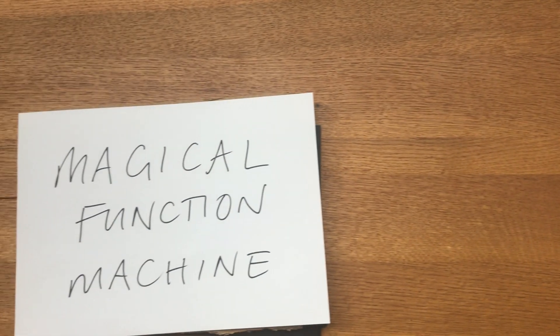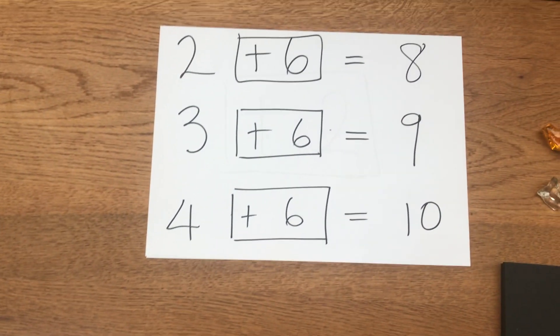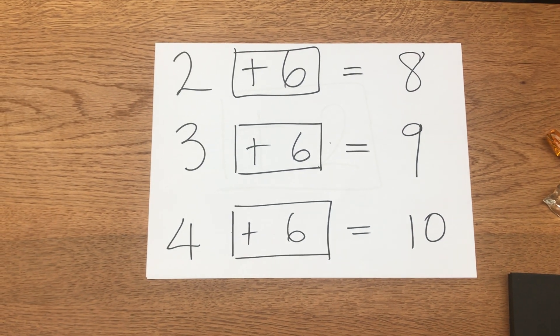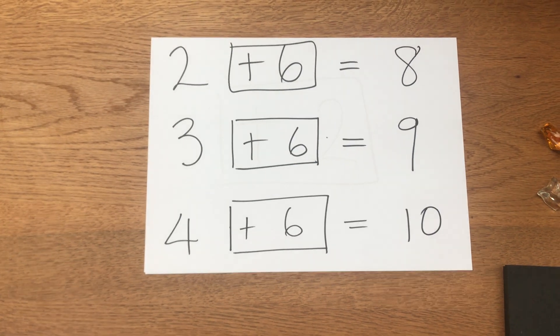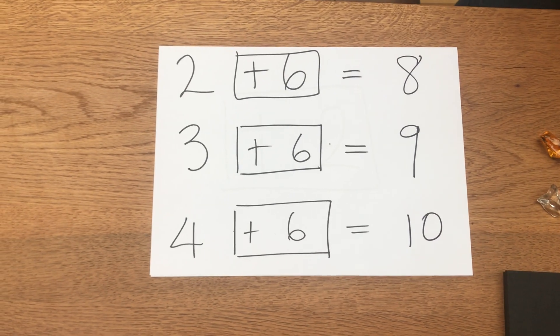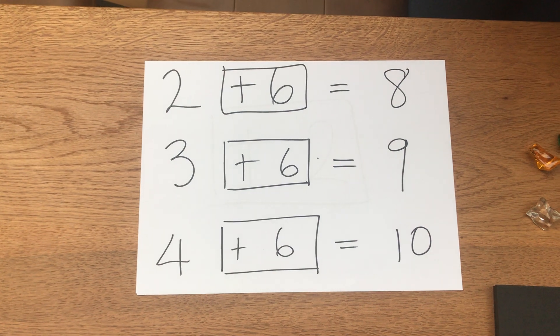So I think we can deduce, you guessed it, this special machine is an add six. Obviously you can change the function within your machine depending on the age group that you're working with.